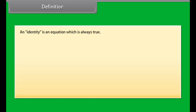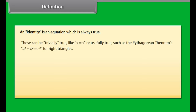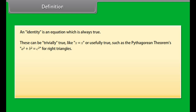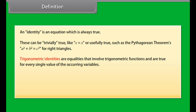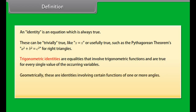An identity is an equation which is always true. These can be trivially true like X is equal to X, or usefully true such as the Pythagorean theorem: A square plus B square is equal to C square for right triangles. Trigonometric identities are equalities that involve trigonometric functions and are true for every single value of the occurring variables. Geometrically, these are identities involving certain functions of one or more angles. They are distinct from triangle identities, which are identities involving both angles and side lengths of a triangle.